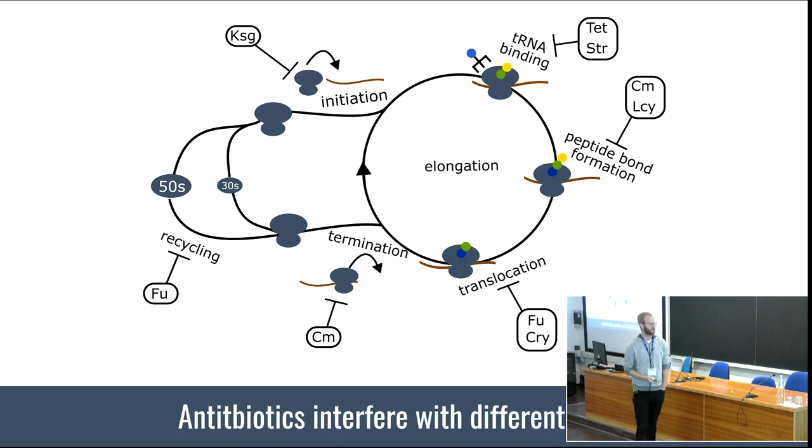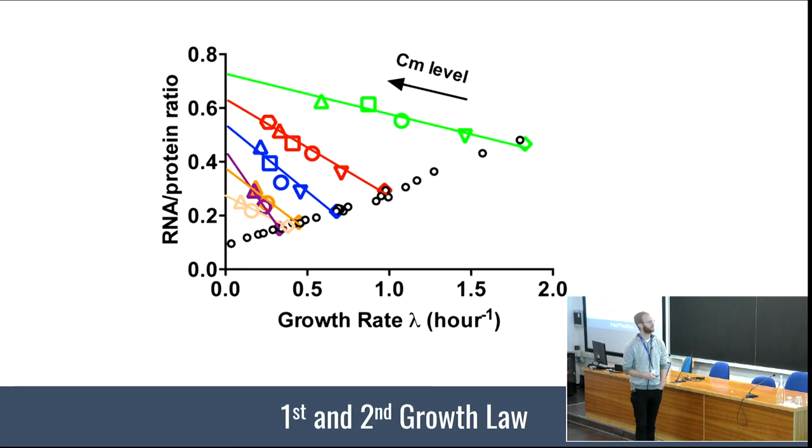This is the kind of plot we've seen a lot, but most talks were mainly about the first growth law and not the second. We're especially interested in why the second growth law goes up. In this paper from Dai et al in 2016, they measured this really nicely, and they measured a lot of elongation rates, but they also measured how elongation rate changes with chloramphenicol.